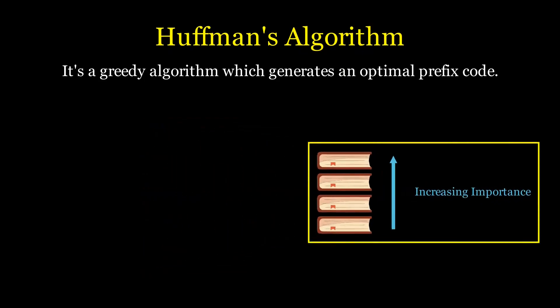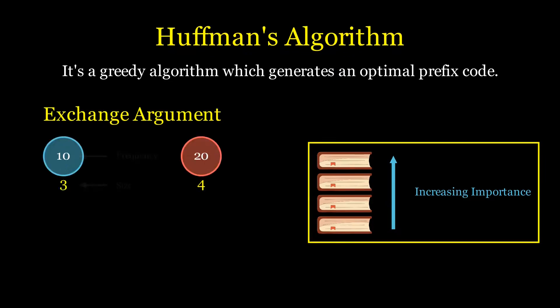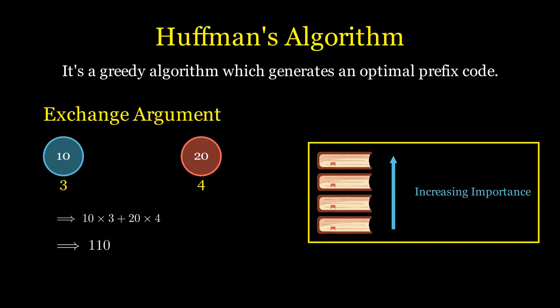Can we prove this formally? It is possible using the exchange argument. Take two characters from a random string not following the Huffman pattern — i.e., more frequent characters have larger encoding size. We can calculate the cost from these two characters. Now if we exchange their sizes to adhere to Huffman's optimal step, we get a smaller cost. This proves that any two characters are better off encoded following Huffman's condition, reducing their partial cost, which adds up to reduce the overall cost.